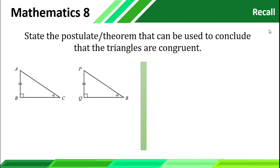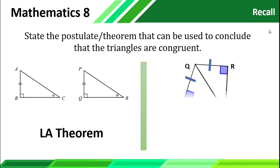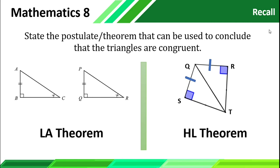For our third figure, we have a leg and angle, so this is under the LA theorem. And for our last figure, we have a given leg, and the hypotenuse of our triangle is congruent to each other because they share a common side, so this is under the HL theorem.